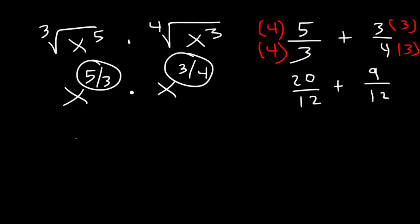And 4 times 3 is 12. So 5 thirds is equivalent to 20 over 12. 3 fourths is the same as 9 over 12. So now we can add 20 and 9. So that's going to be 29 over 12. So that's equivalent to the 12th root of x to the 29.